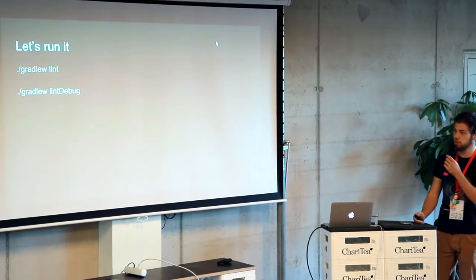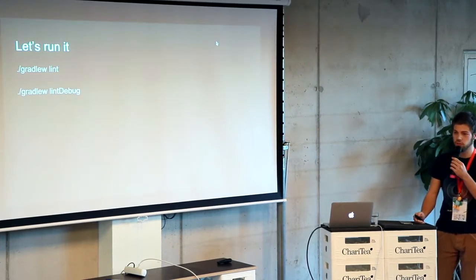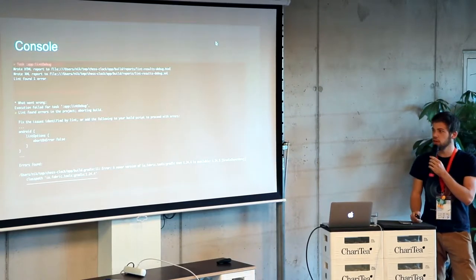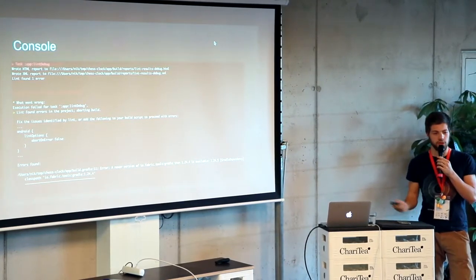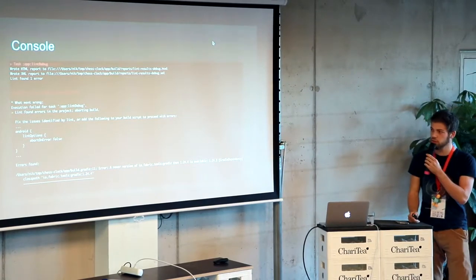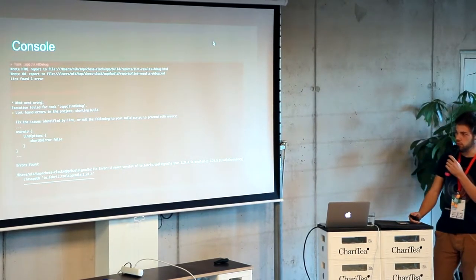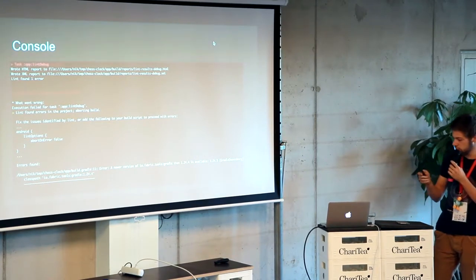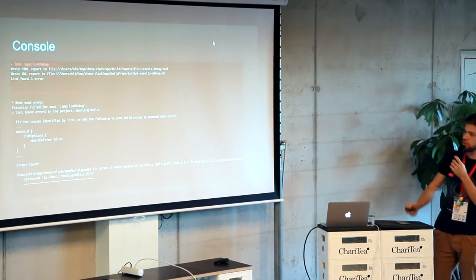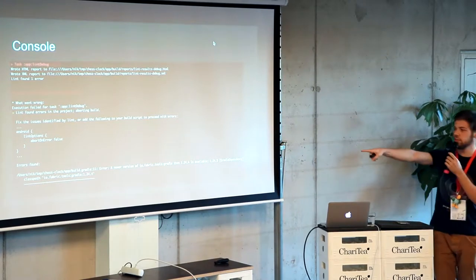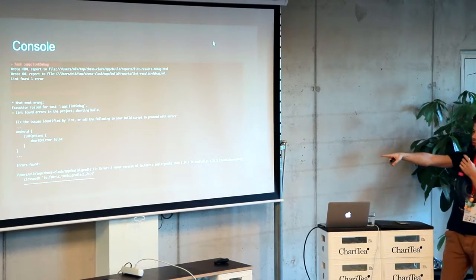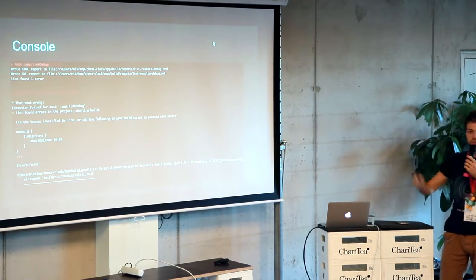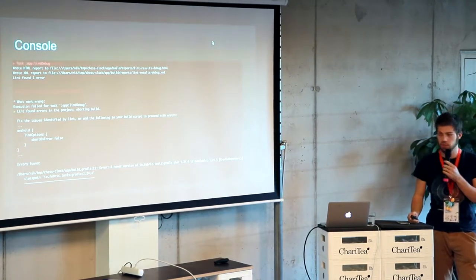We can use the Gradle wrapper, and then we can just say Lint, or Lint debug if we just want to run on the debug variant. If we run it from the console, we might get a console report like that. Here there's one thing that Lint is complaining about - basically it's saying there's a newer version of a library available. It also tells us that two reports are going to be generated: one is XML, one is HTML.